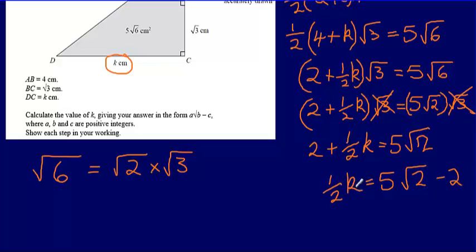And so if half K is 5 root 2 minus 2, that means that K will be equal to 10 root 2 minus 4. So just multiplying both sides by 2 because half K equals 5 root 2 minus 2. So to get from half K to K, just multiply both sides by 2. So our final answer here is going to be K is equal to 10 root 2 minus 4.